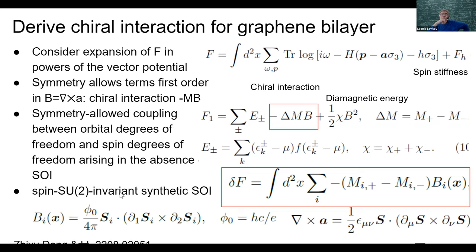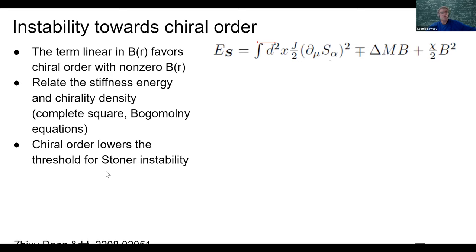Another interesting feature is that this interaction is SU(2) invariant, which makes it very different from ordinary spin-orbit interaction. In regular spin-orbit coupling — like L·S in an atom — performing a spin rotation requires a simultaneous rotation of orbital momentum to maintain invariance. Here, however, this interaction is SU(2) invariant under rotation in spin space with nothing happening to orbital degrees of freedom — as it should be, since there is no spin-orbit interaction in the Hamiltonian to start with.